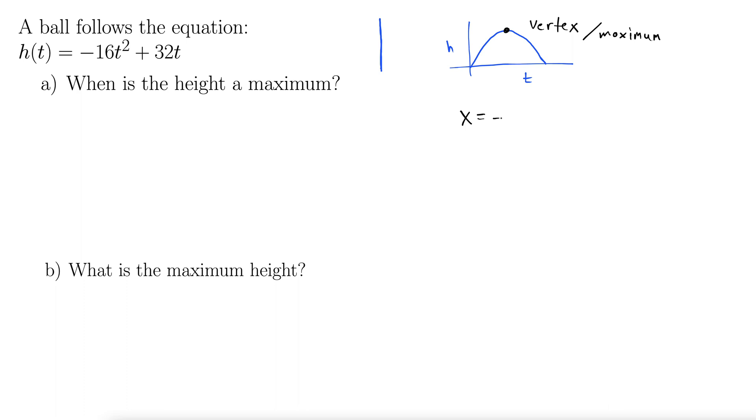X equals negative b over 2a. And y is then f of that x, whatever that x. I'll just say f of negative b over 2a.